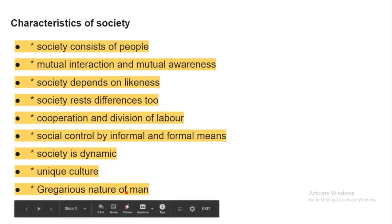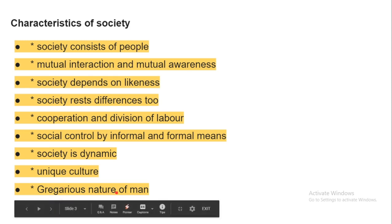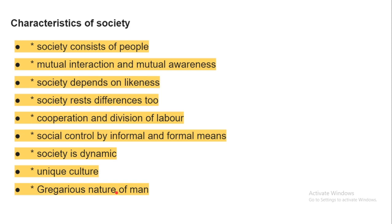Now, the characteristics of society: first, society consists of people; mutual interaction and mutual awareness; society depends on likeness but also rests on differences; cooperation and division of labor; social control by informal or formal means — formal rules like legislation and informal ones like social practices. Society is also dynamic and changing, has a unique culture, and reflects the curious nature of men.